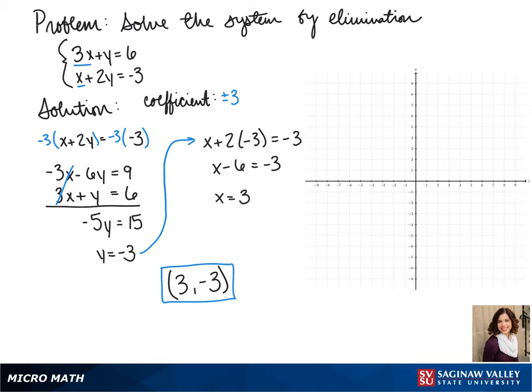To graph our system, since both of our equations are in standard form, the easiest way to do it would be to find our x-intercepts and y-intercepts. For our first equation, our x-intercept is 2, and our y-intercept is 6, so we plot the points 2, 0, and 0, 6, and we connect those. That's our first line.